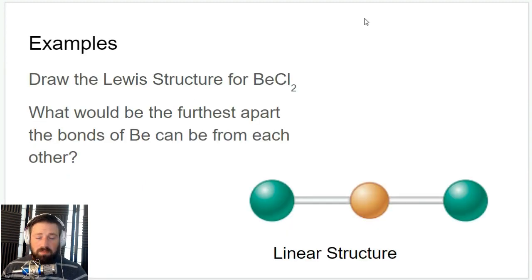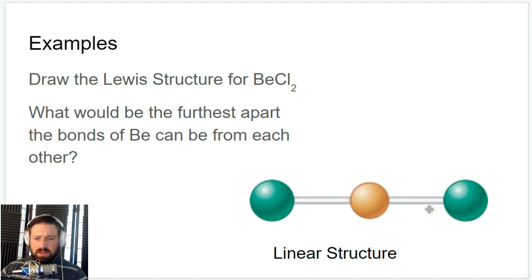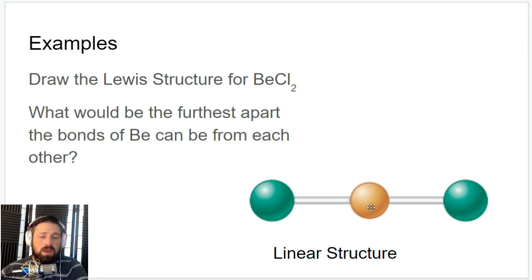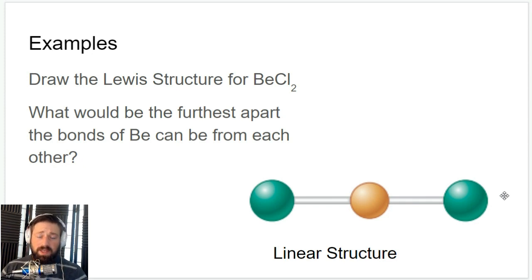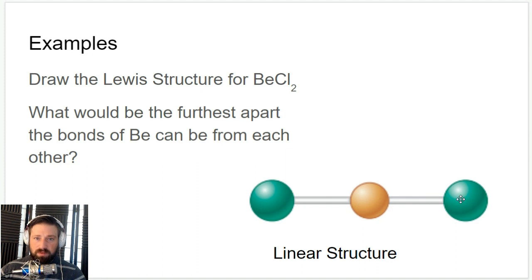If you take beryllium dichloride and draw its Lewis structure, the electrons in these bonds are going to try to push each other apart as far as possible. Since there are only two of them, they're going to end up on opposite sides of the central atom. In relation to the central atom, we see a nice linear structure — that's exactly what we name it. If you have two bonds or two groups of electrons, you're going to have a linear geometry.